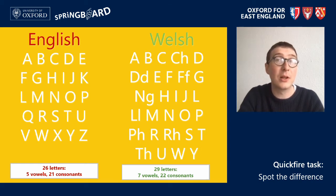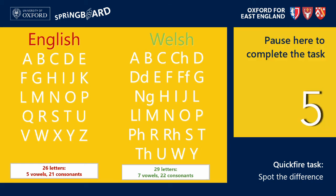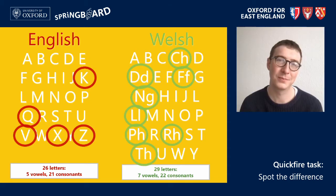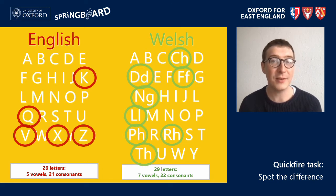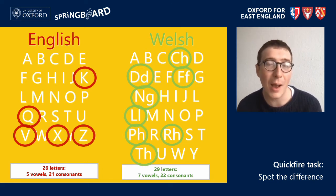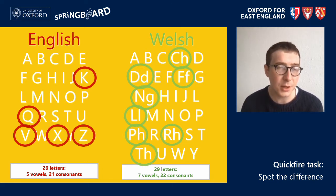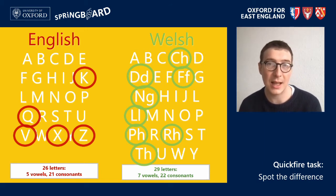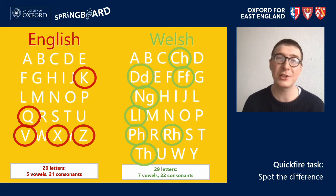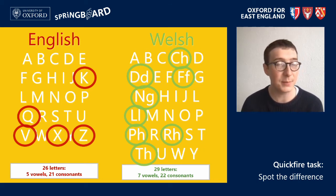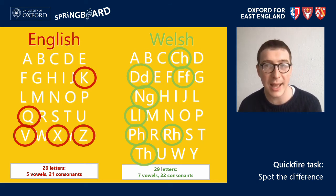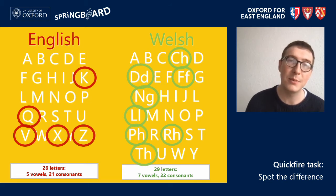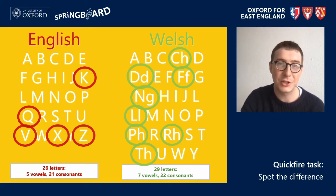Pause for a few minutes to spot the differences between the Welsh and English alphabets, and then we'll look at them together. The five English letters that don't appear in Welsh are K, Q, V, X, and Z. And the eight letters that are unique to Welsh are CH, DD, FF, NG, LL, PH, RH, and TH.